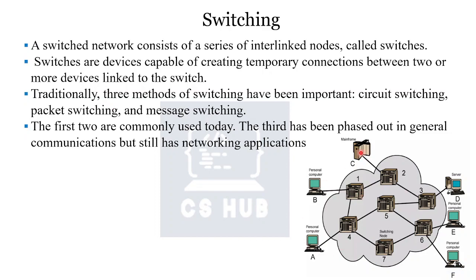Here is an example picture with a few computers, mainframes, servers, etc. You can communicate with temporary devices and switches. If you want to send data from computer A to computer B, there are multiple paths: either 1-2-3 or 1-4-5-3. There are many possible paths and a route is selected, creating a temporary connection for communication.